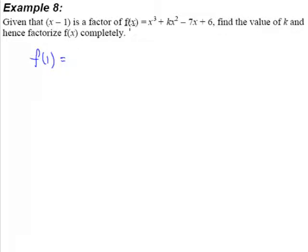So x cubed would be 1 cubed plus k multiplied by 1 squared minus 7 multiplied by 1 plus 6. This shouldn't be a problem for you, equals to 0.